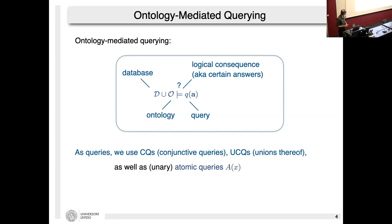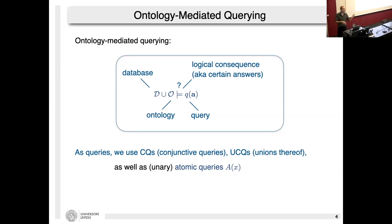The queries we typically use are relatively inexpressive, because very expressive ones easily become undecidable in a logical consequence setting. Mostly people use conjunctive queries or unions of conjunctive queries. I will also speak about atomic queries — single unary relations you want to query for. These look ridiculously simple to most database people, but together with an ontology in the background, even querying for all directors or movies is non-trivial.